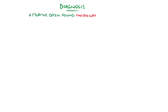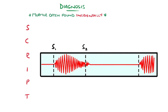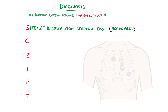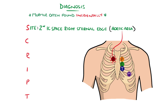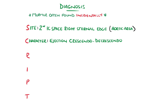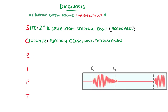A diagnosis may be suspected clinically but is confirmed with echocardiography. The murmur of aortic stenosis is often found incidentally. It is best heard at the right sternal edge at the second intercostal space, also known as the aortic area. Its character is classically described as a crescendo-decrescendo systolic murmur — meaning an increasing sound to a peak, then decreasing — which looks like a diamond shape on a phonogram. This murmur often radiates to the carotids on both sides.